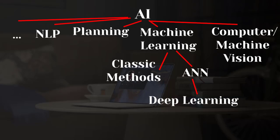There is another term that is really popular and we hear all the time — we might think it's something different from artificial intelligence or machine learning, but it's not. It's actually a part of machine learning. This topic is deep learning. Deep learning, or in other words deep neural networks, is a kind of artificial neural network.